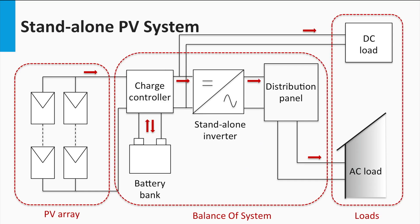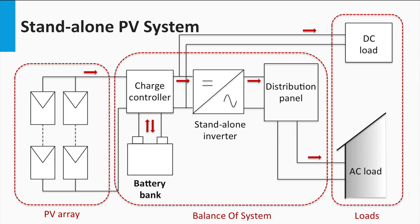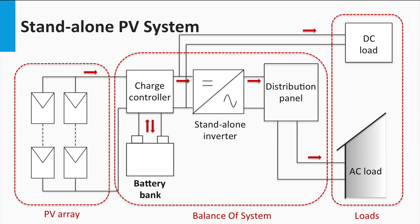The stand-alone PV system has these important PV system components. The PV array is an interconnection of modules that supplies the required photo-generated power to the system. The power rating of the array is determined based on the load requirements. The battery bank is the lifeline of the stand-alone PV system, as it greatly increases the usability of the PV system. Without the battery, the system would be unable to meet the load demands outside the available daylight.